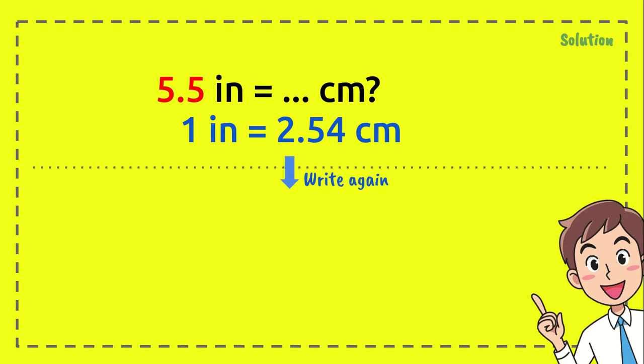We need to get the formula. So we need to write again the formula, that blue one. Now you put it here. And after that, from the question, we have this number. We have 5.5.